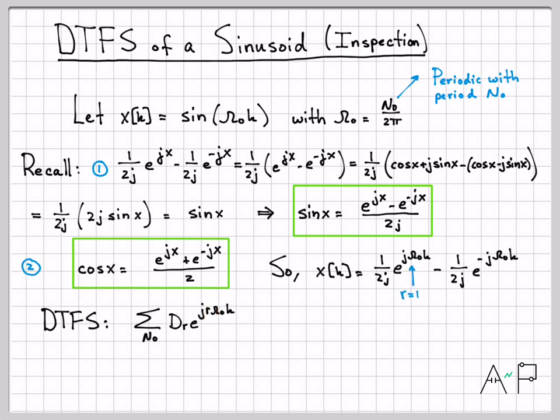And that's exactly what this is. This right here is the r equals 1 term in my DTFS sum. So that must be d1 right here, the number out front, the weight must be d1. Similarly, this has to be the r equal negative 1 term, which means this number out front must be d of negative 1, d sub negative 1.